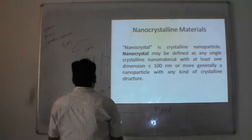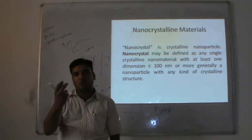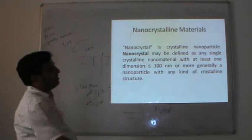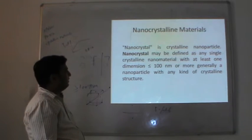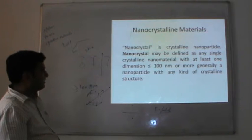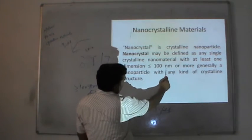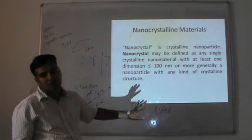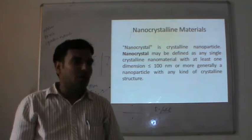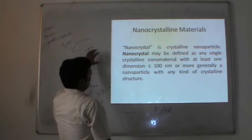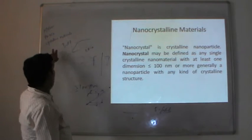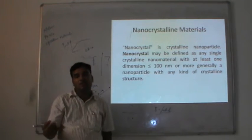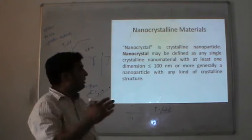The next one is nanocrystalline material. As discussed, wherever the prefix nano is used, it means some dimension of the material is in the range of nanometres. Nanocrystalline may be defined as any crystalline nanoparticle with at least one dimension of 100 nanometres or less — more generally, a nanoparticle with any kind of crystalline structure. Most nanoparticles are amorphous, but some materials show a crystalline structure even at the nano level — those are nanocrystalline materials.